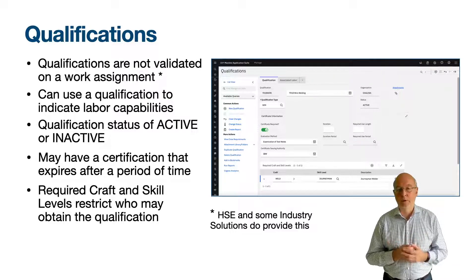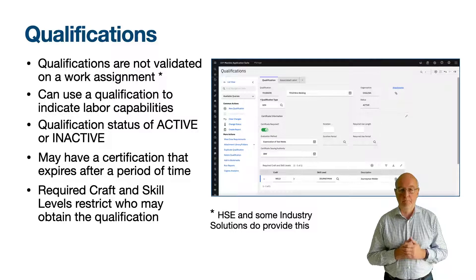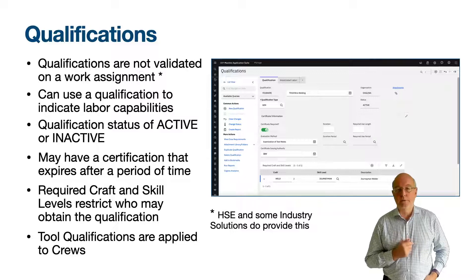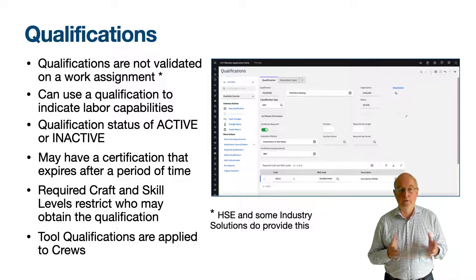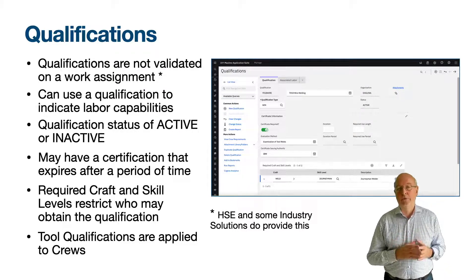The required craft and skill levels table window allows you to enter the craft or craft and skill level which a labour must have for the qualification to be assigned to them — it effectively restricts who the qualification can be assigned to. For example, a welding certificate would be associated with a craft of welder, but a specialist welding certificate may only be associated with the highest-ranked welder with a skill level of journeyman. Do not think of this as the qualifications needed to achieve a craft and skill level, but rather the qualifications that may be gained by labour who already have the craft and skill level. At the bottom of the qualifications application you can enter tools that require this qualification, which is used with crews.